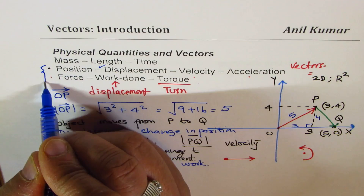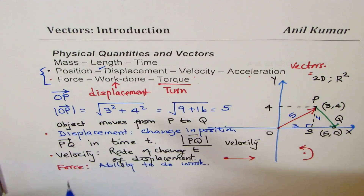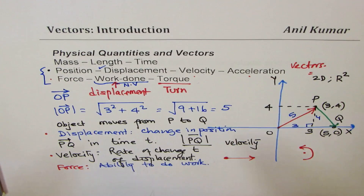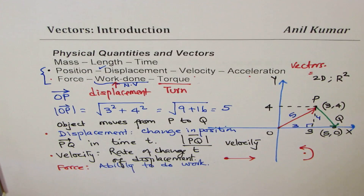Position, displacement, velocity, acceleration — these are all vectors. Force is a vector. However, work done is a scalar, not a vector. Torque (turning) is a vector. With this, your introduction to physical quantities is over and you don't need to know more than this for now.